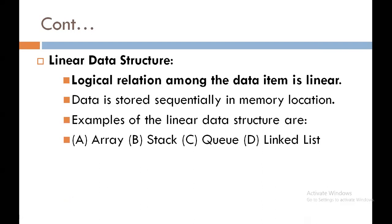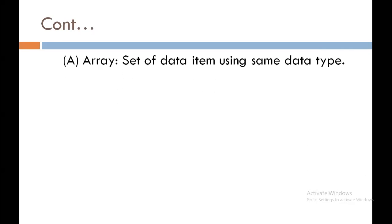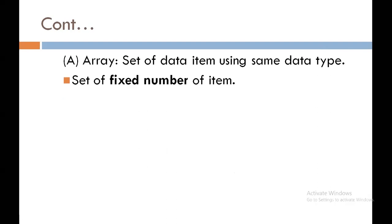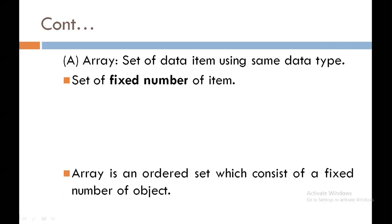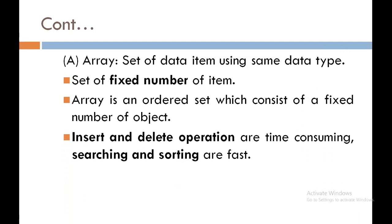The first example of linear data structure is array. An array is a collection of data of the same data type known by the same name. It is a set of a fixed number of items — an ordered set which consists of a fixed number of objects. In an array, insert and delete operations are time consuming, but searching and sorting operations are fast.